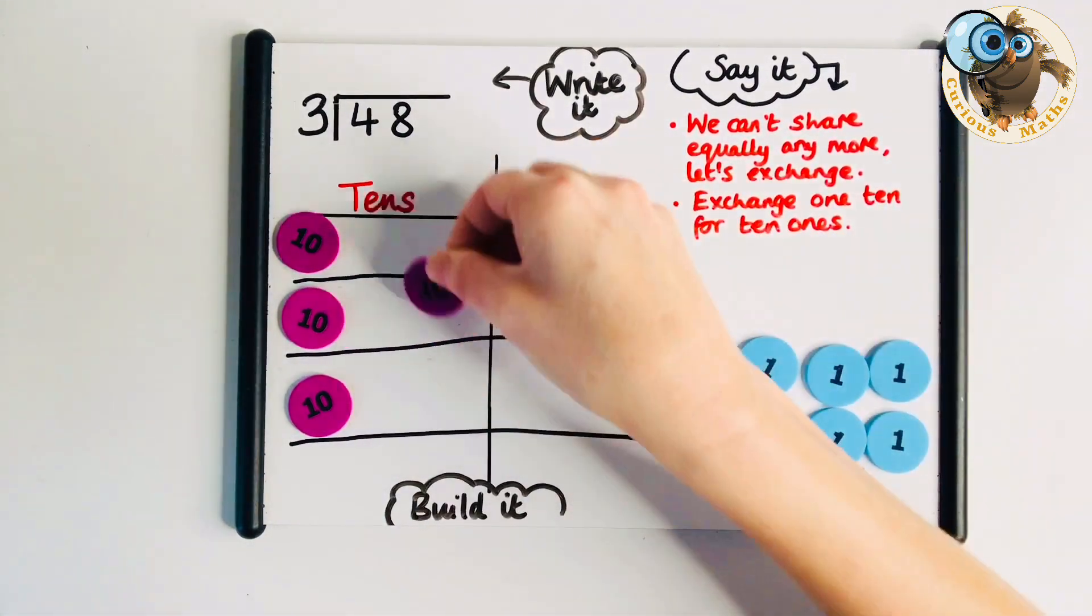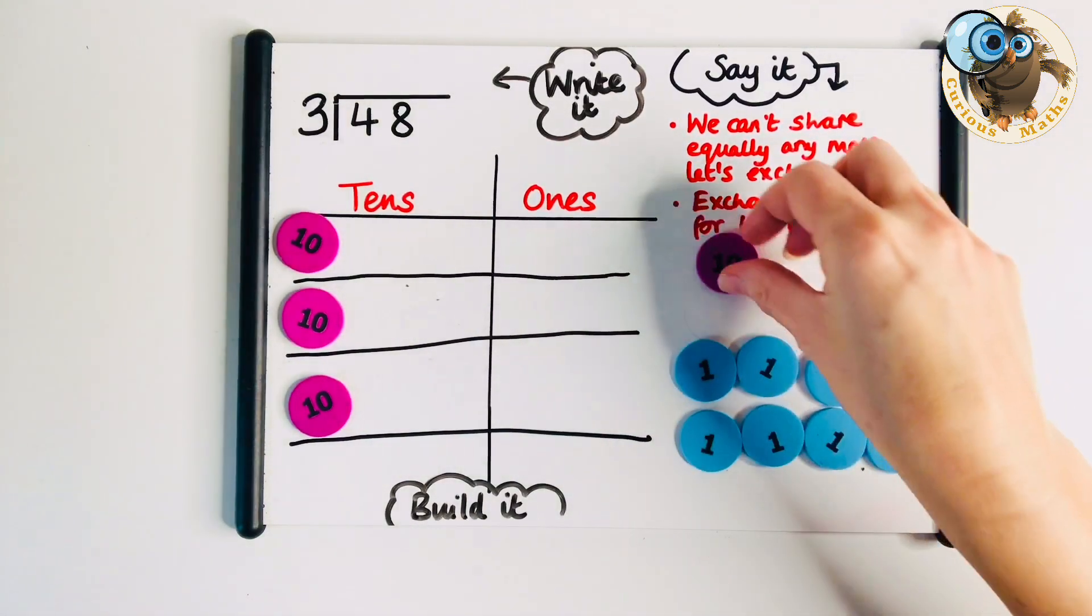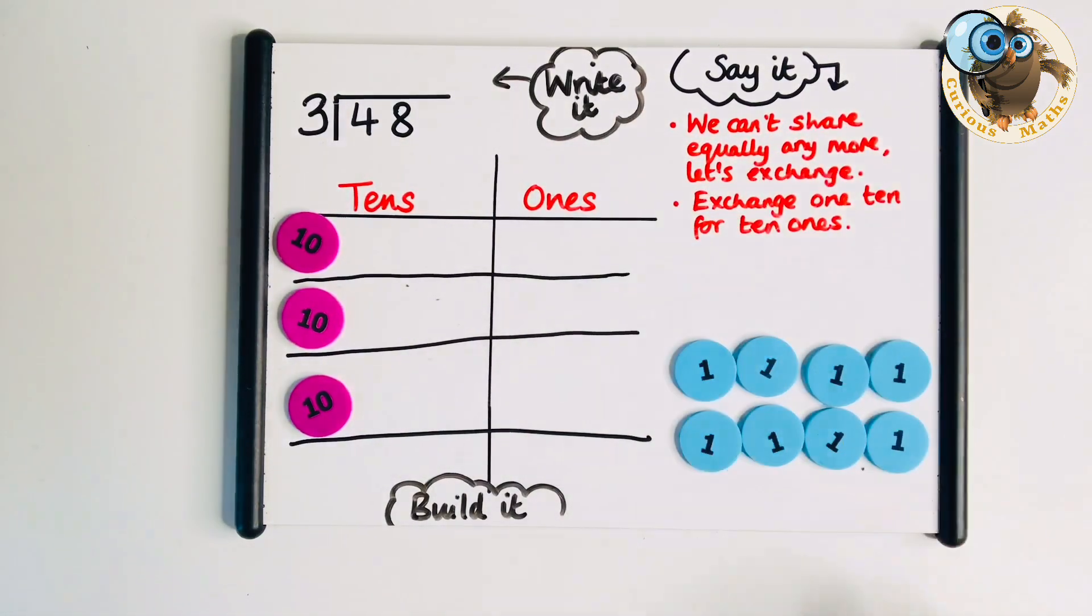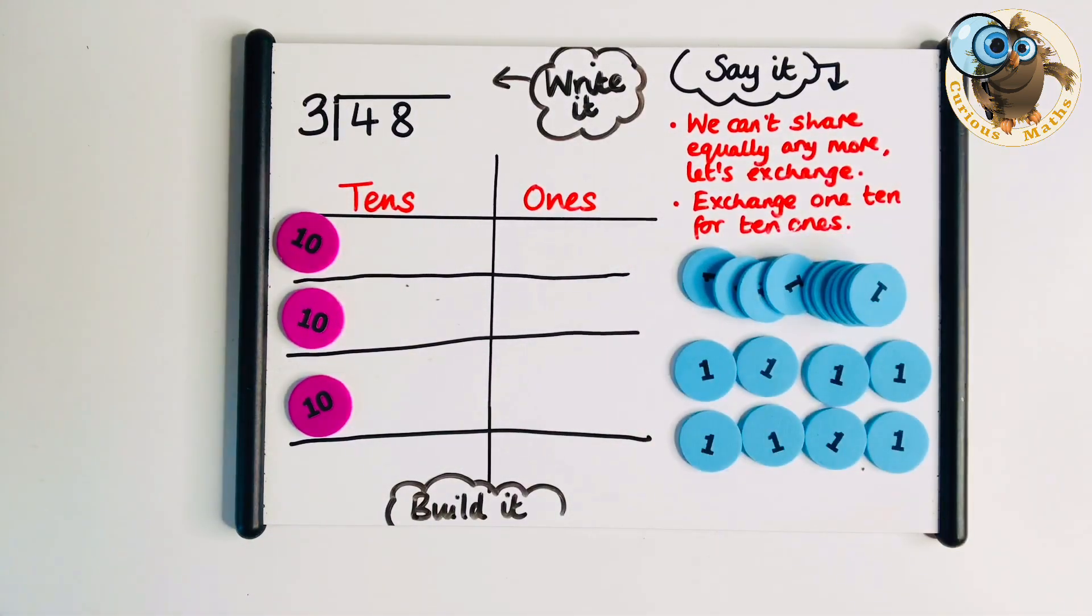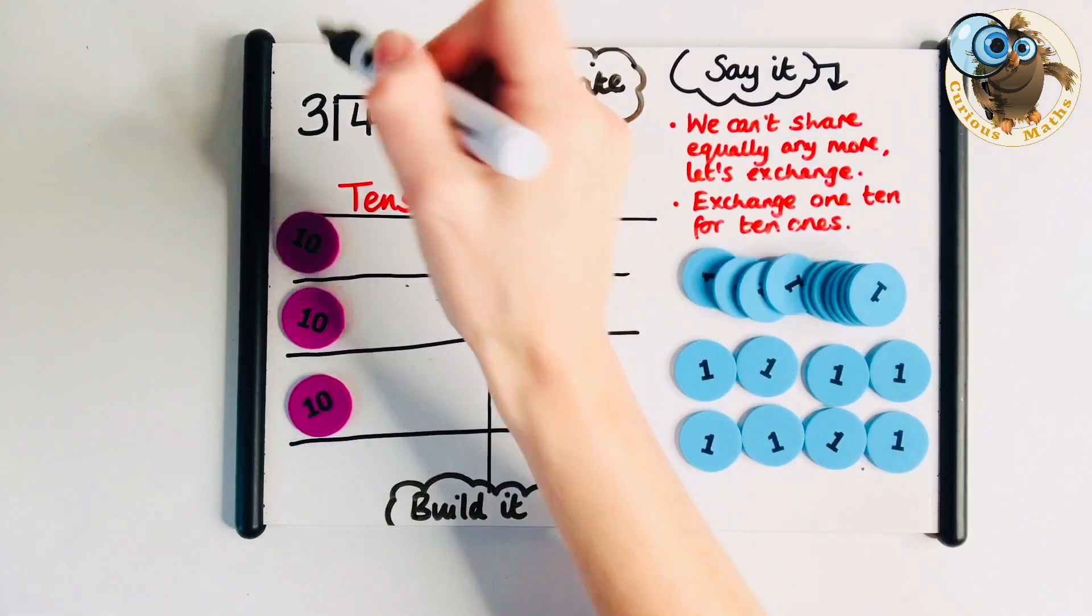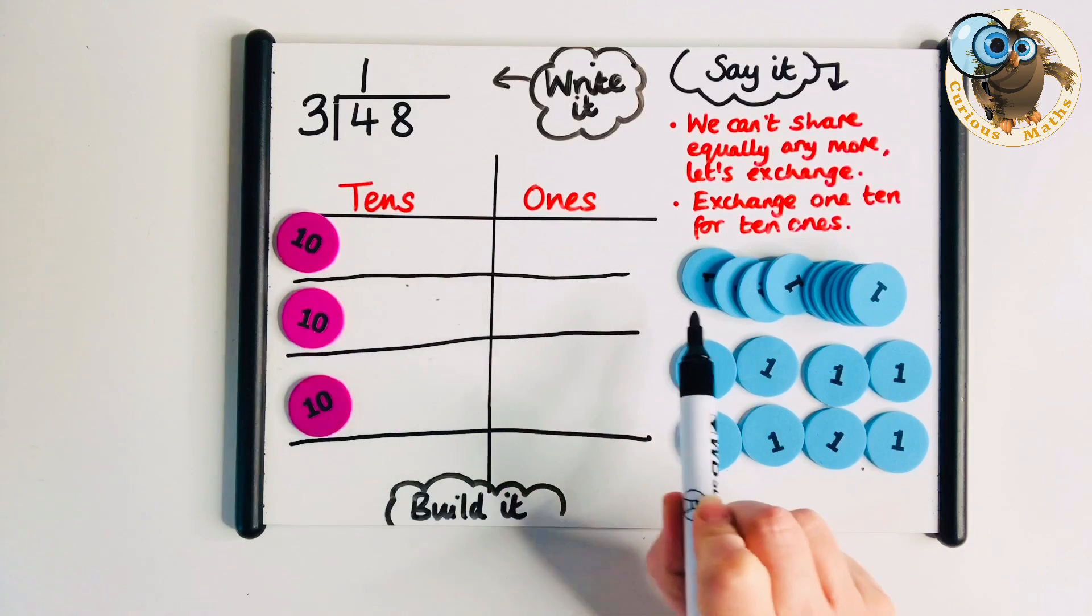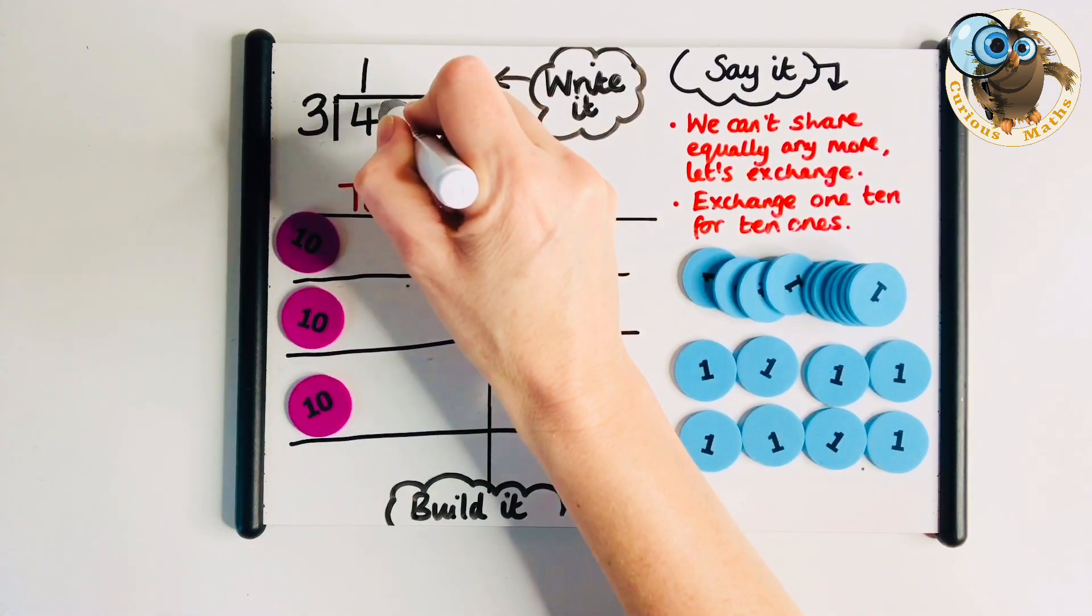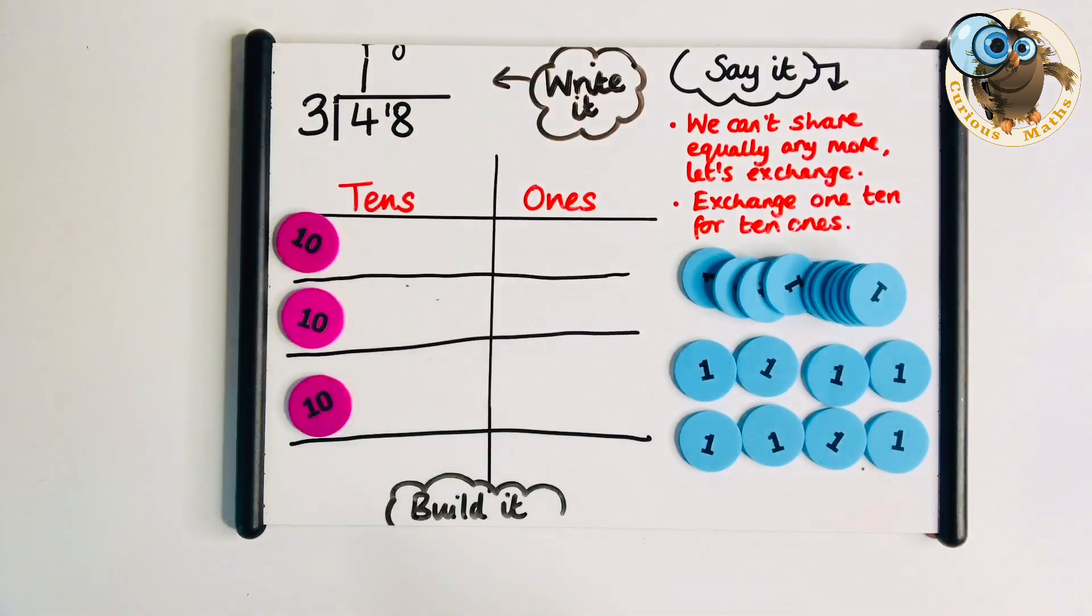We can't share that equally in the form it's in, so we're going to do some exchanging. We exchange one of those tens for 10 ones and show what we've done up here. There's our one 10. Now let's write our exchange - tens and ones, we have 18 ones.